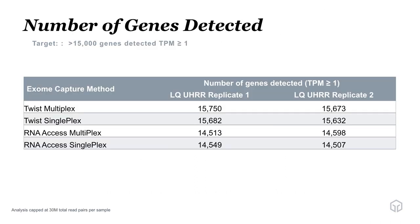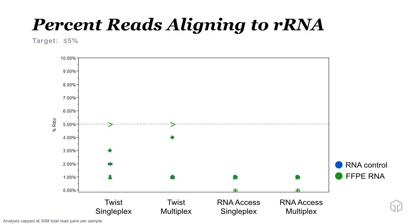Next, we looked at number of genes detected. The target is greater than 15,000 genes detected with a TPM count of greater than or equal to 1. We looked at replicates of that low-quality UHRR across TWIST multiplex, TWIST singleplex, RNA Access multiplex, and RNA Access singleplex. We see nice reproducibility — approximately the same number of genes called in each capture, and very similar between multiplex and singleplex for TWIST. Both TWIST multiplex and singleplex meet the criteria of greater than 15,000 genes. RNA Access was slightly lower, just below that at approximately 14,500, below our target.